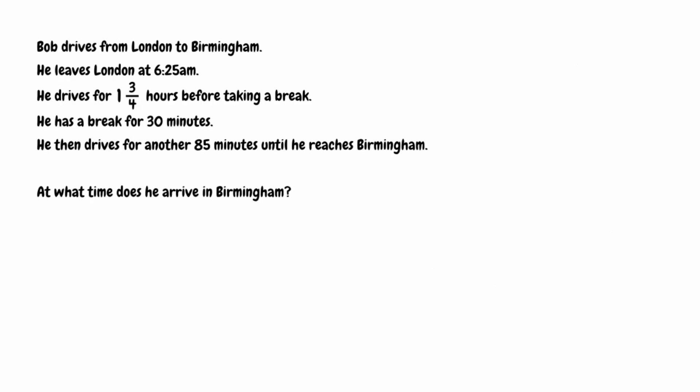For our final question, Bob drives from London to Birmingham. He leaves London at 6:25am. He drives for one and three quarter hours before taking a break. He has his break for 30 minutes. He then drives for another 85 minutes until he reaches Birmingham. We need to figure out the time that Bob arrives in Birmingham. We'll figure out each individual time at each point in the journey.